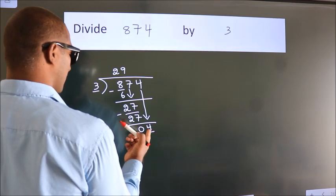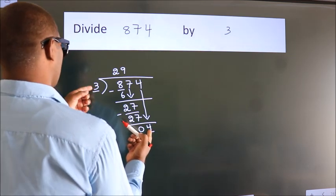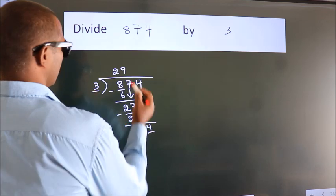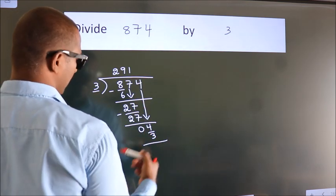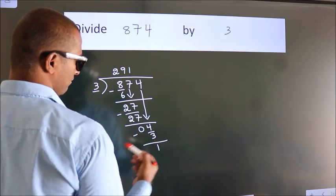So 4. A number close to 4 in the 3 table is 3 times 1, which is 3. Now we subtract. We get 1.